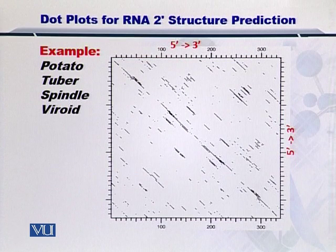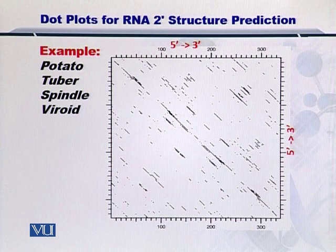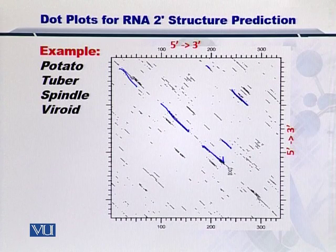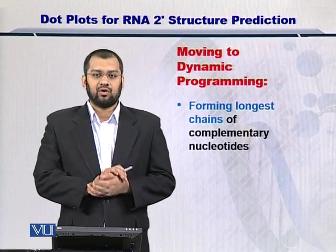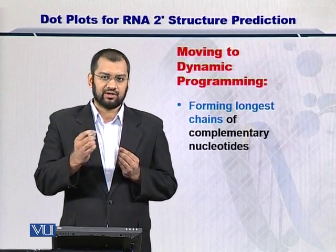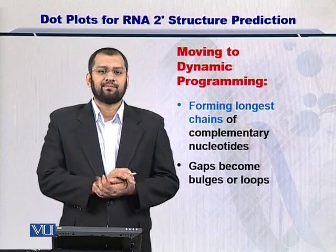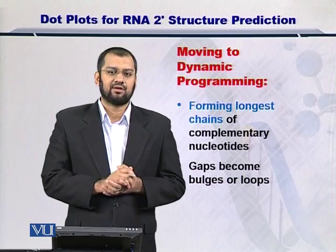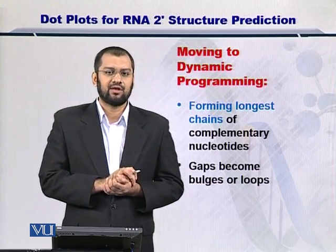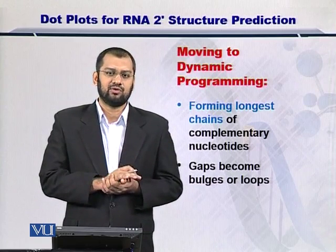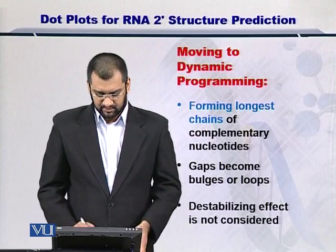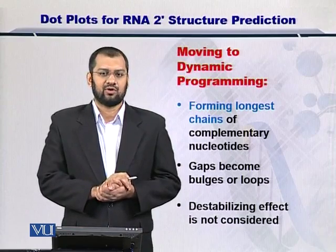From your textbook, there is an example of the potato tuber spindle viroid RNA secondary structure prediction using the dot plot, and you can see there are long streaks within this plot which represent the possibilities of secondary structures that can be predicted. Given a dot plot, all you have to do is form the longest chain along the diagonal, and that will be the best secondary structure that can be reported. However, if you have two or more equally long secondary structures, you may want to look at the gaps, which will essentially be present in the form of loops, and you want to reduce them as much as possible. You must note that the destabilizing effect is not considered in a dot plot.